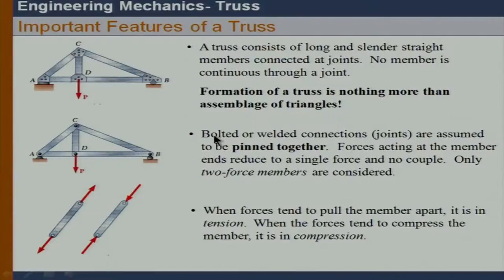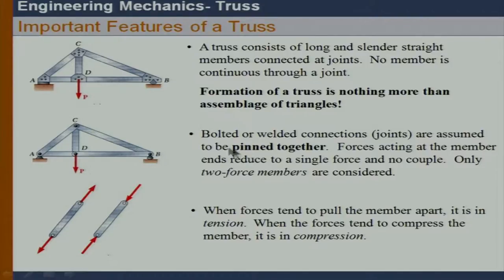Let us start with the important features of a truss. Usually, a truss consists of long and slender members connected at joints, and no member is continuous through a joint. We can simply say that the formation of a truss is nothing but an assemblage of triangles. The basic assumption made is that although truss joints are bolted or welded connections, they are actually assumed to be pin connections.